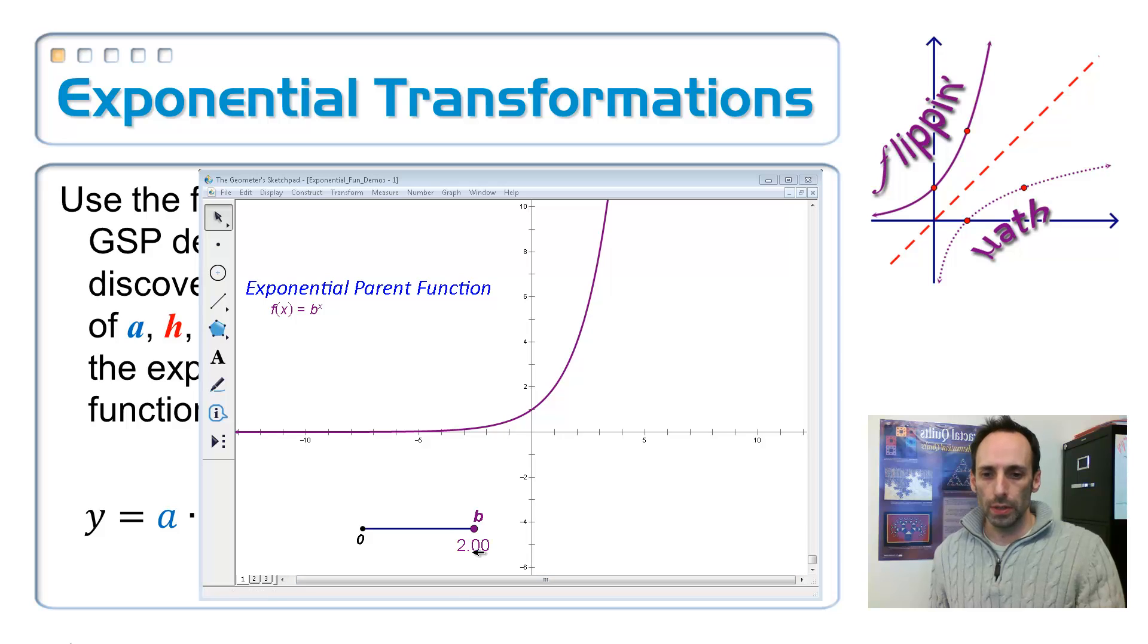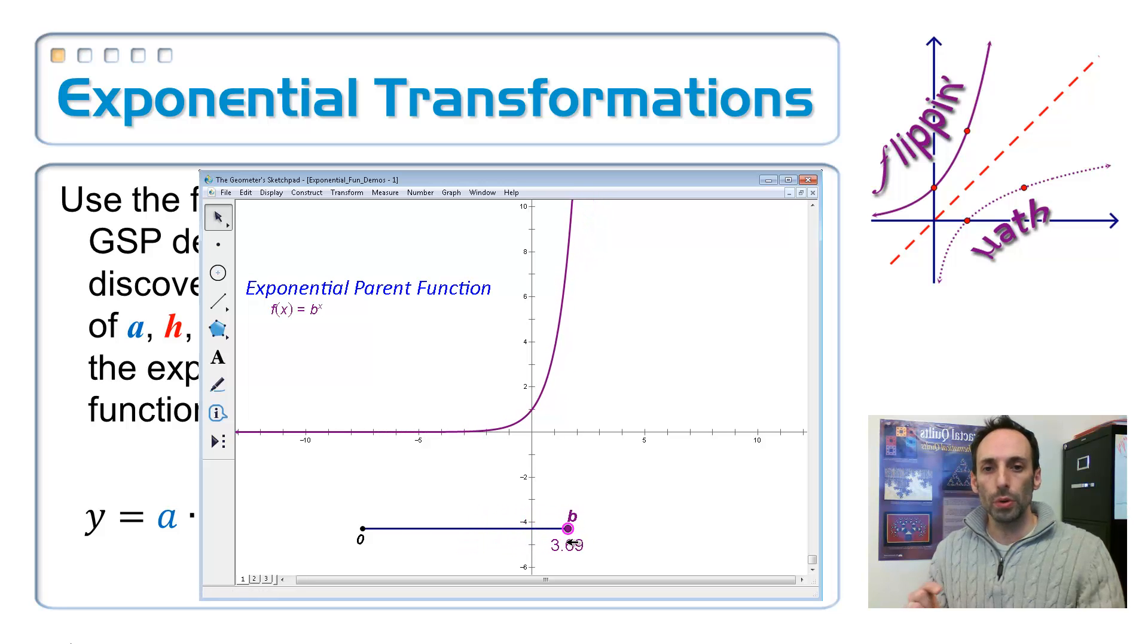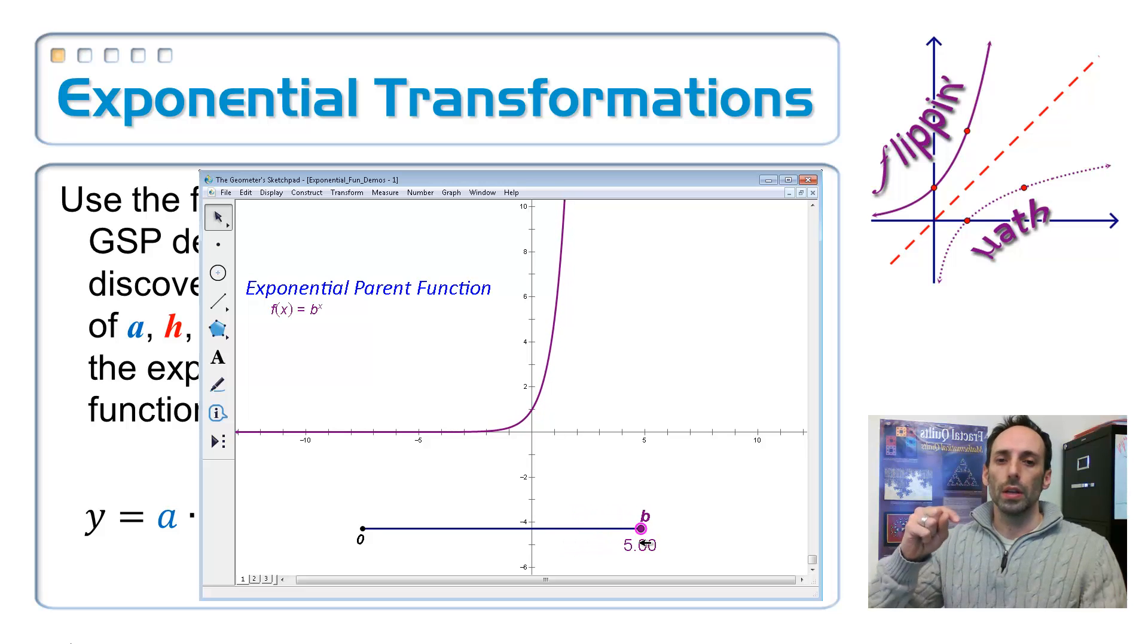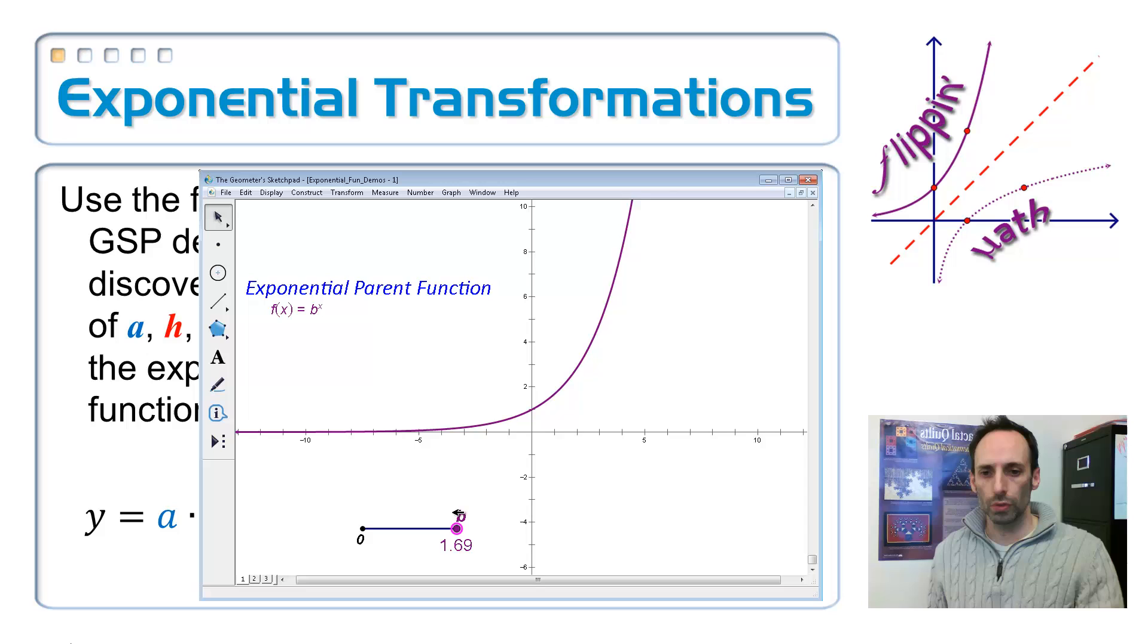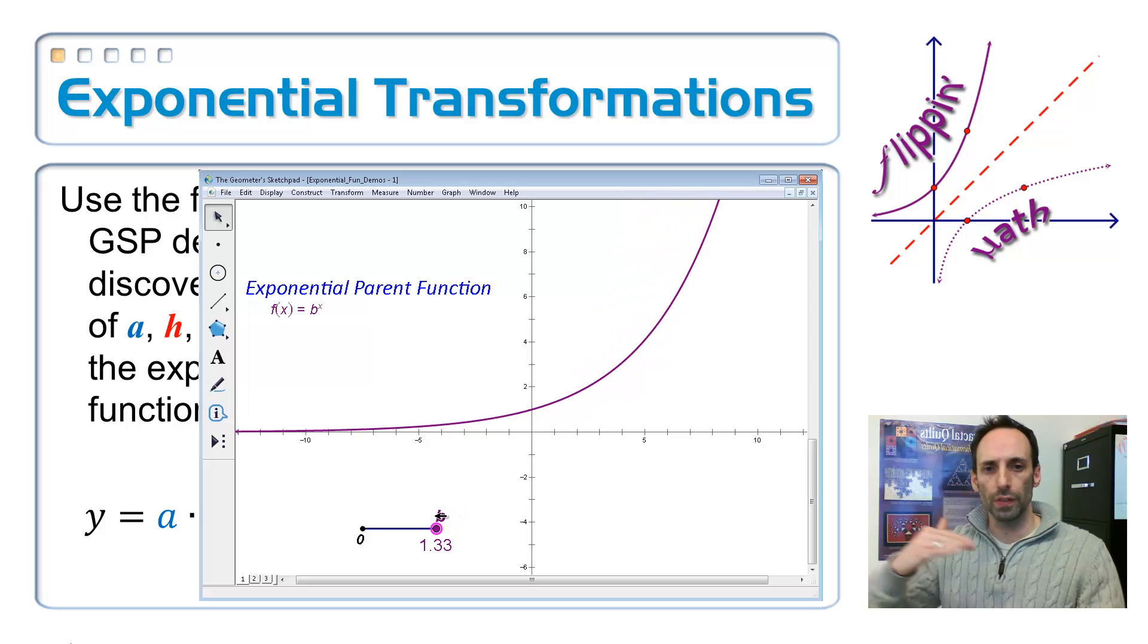If I make it, right now it's at 2, so basically it's graphing 2 to the X. So I can make it bigger, and when I do, it gets steeper. But notice that it always goes through the point 0, 1, because anything raised to the 0 power is equal to 1. Okay, but it's just getting, it's bending to get steeper. And if I make it closer and closer to 1, it's going to start flattening out.